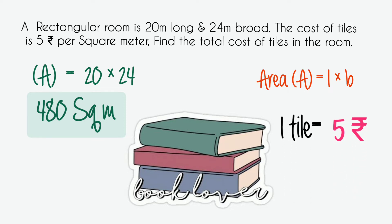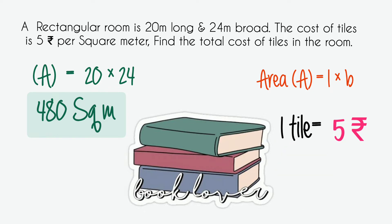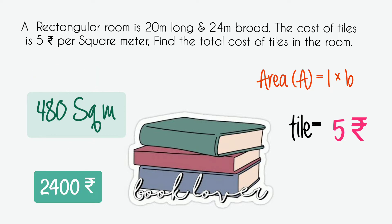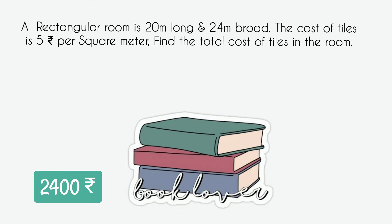We get the area as 480 square meters. The cost of one tile is 5 rupees. The 480 also tells us there are 480 small squares, which are the tiles of this rectangular room. To find the total cost, we multiply 480 tiles by 5 rupees per tile and we get 2400 rupees as the total cost of tiles.